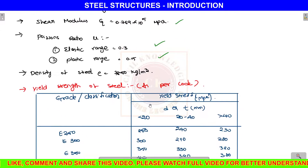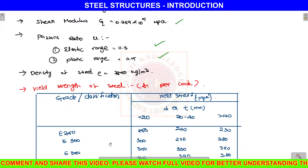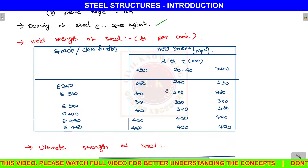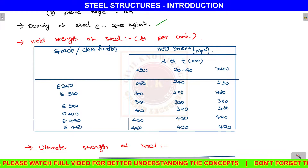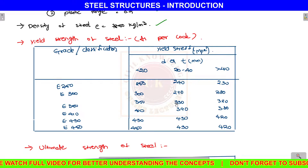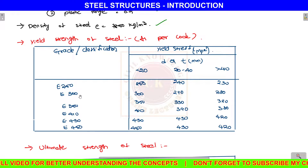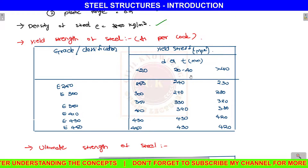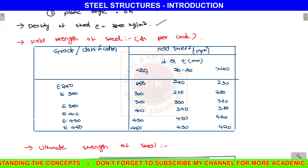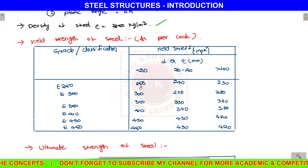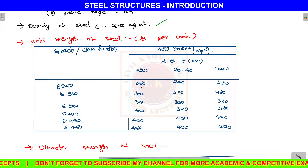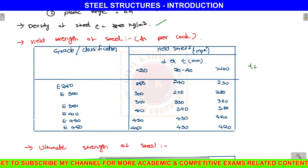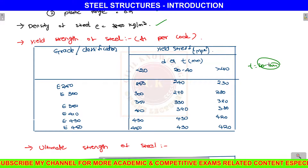The density of steel in terms of kg per cubic meter is 7850. Next, coming to the yield strength of steel: the yield strength is thickness-dependent. For thickness less than 20 mm, the yield strength is 250 MPa. For thickness between 20 to 40 mm, it is 240 MPa.